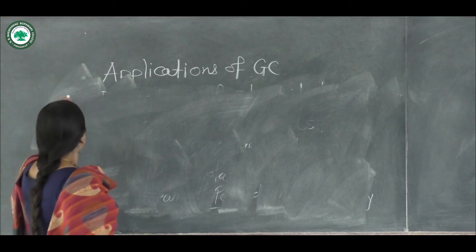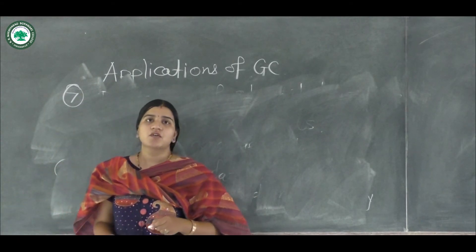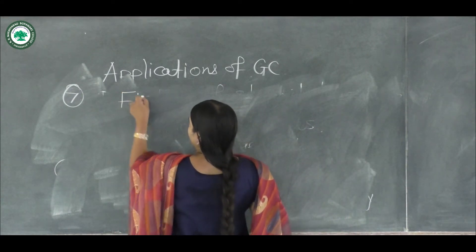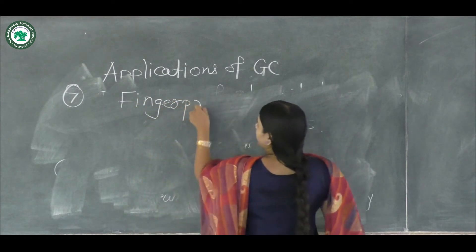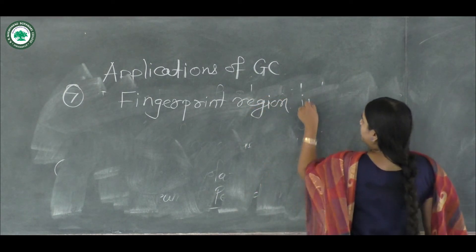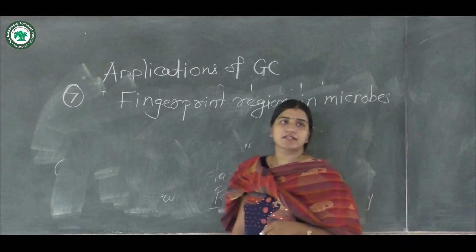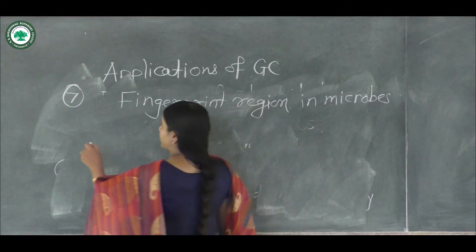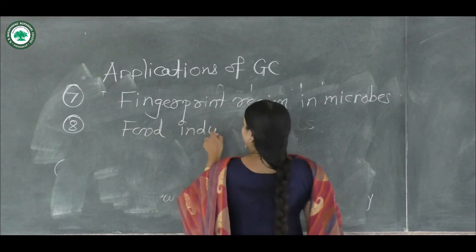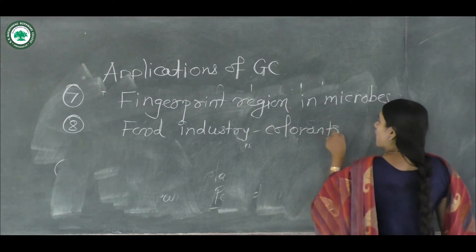The next application of gas chromatography is to determine the fingerprint region in microorganisms. Gas chromatography plays an important role in the determination of the fingerprint region in microorganisms. GC has also found a main application in the food industry with respect to analysis of different colorants and flavors.